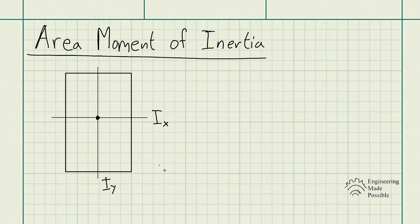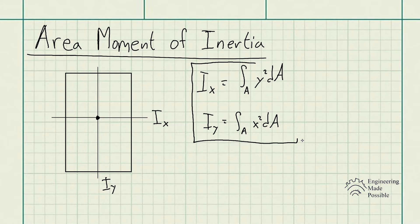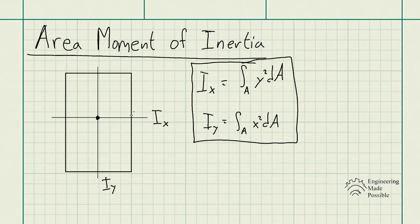The equation for the area moment of inertia about the x-axis is equal to the integral of y-squared dA, and the area moment of inertia about the y-axis is equal to the integral of x-squared dA. This is always with respect to the centroid of the area, so no matter what geometry — whether it's a square, rectangle, or other — it's always going to be with respect to the centroid. There are equations you can memorize for specific geometries.